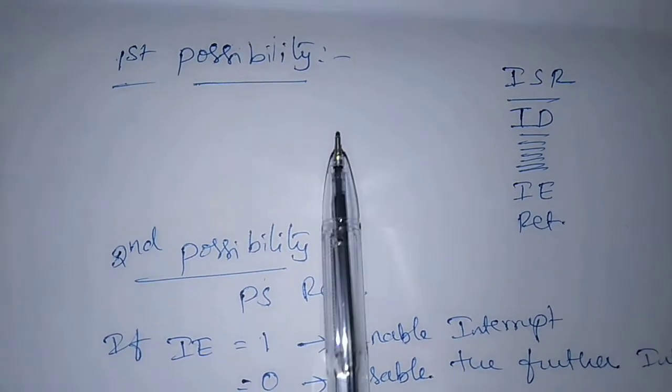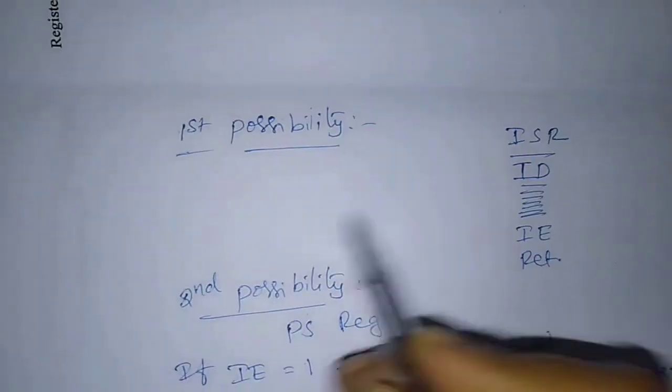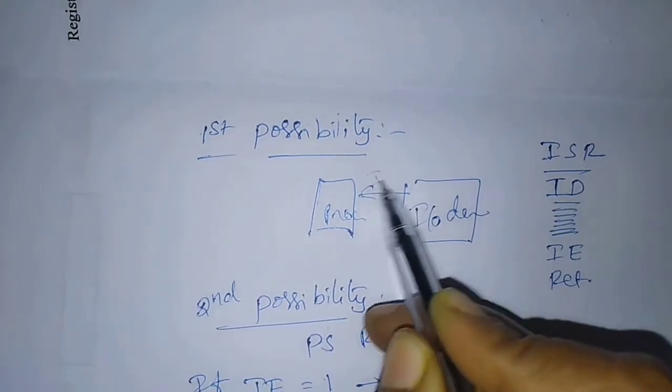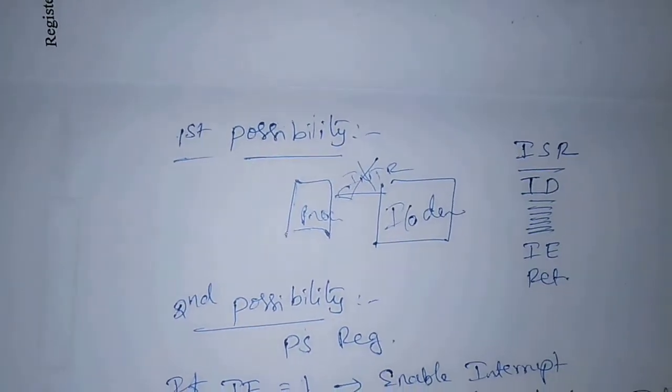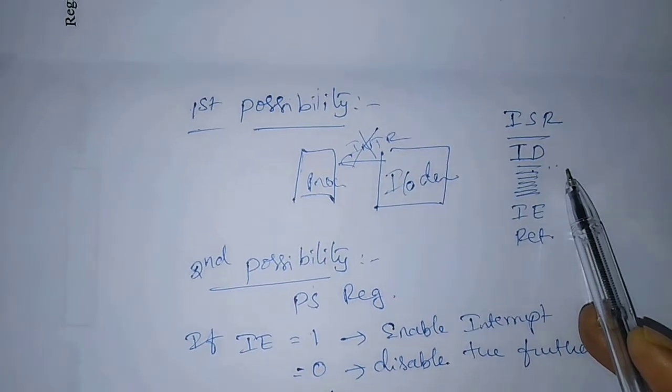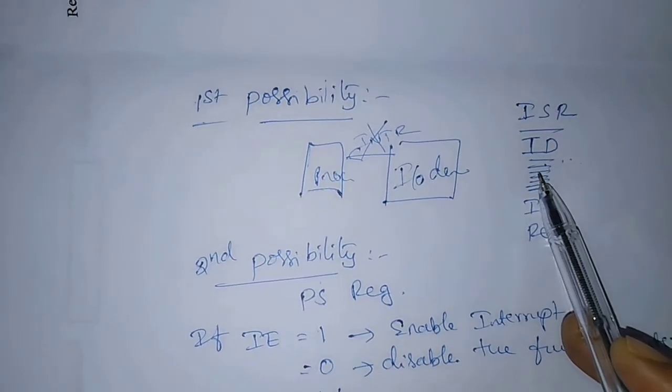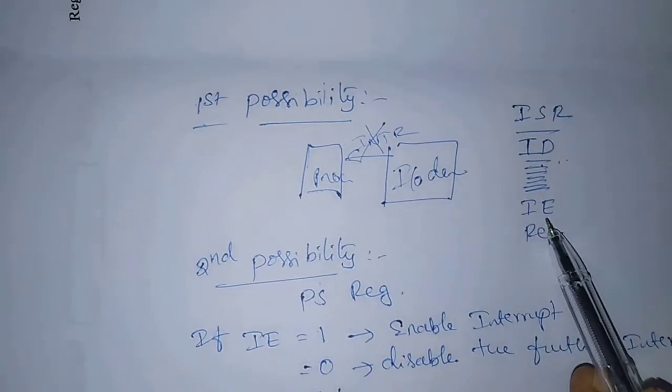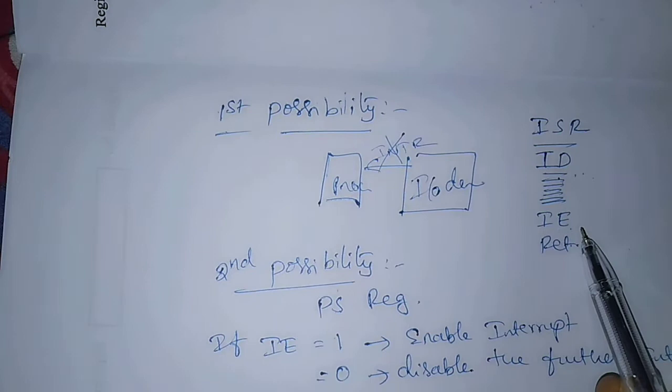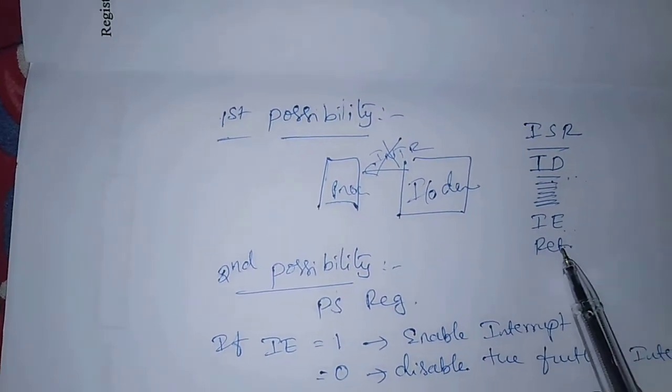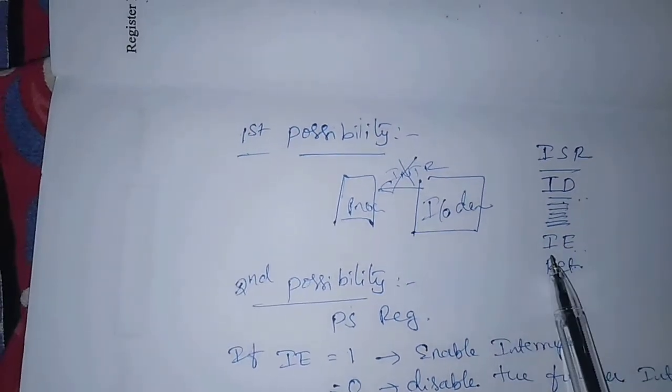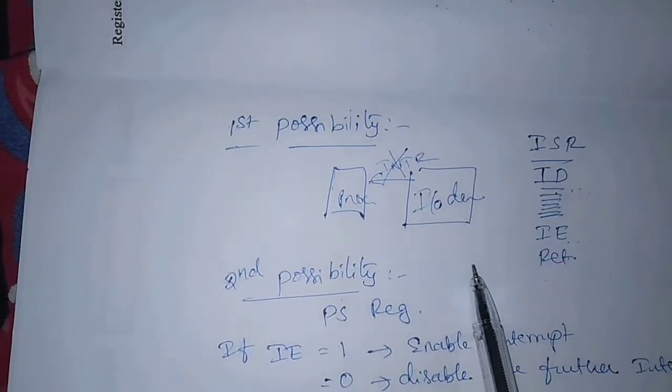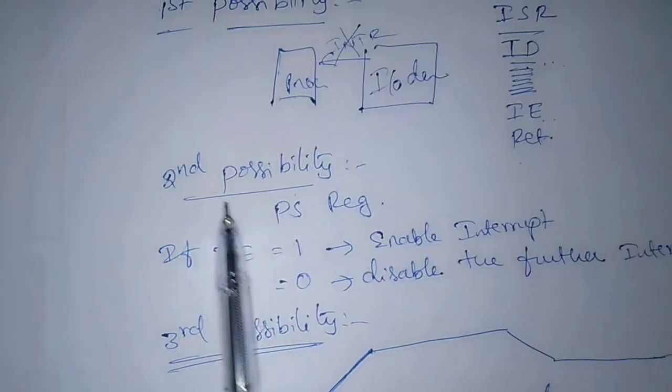In case of first possibility, to ignore the interrupt request signal. This is processor, this is IO device, this is IO device interrupt request signal, INTR. To ignore INTR line, interrupt disable instruction is used as the first instruction in the ISR, so that no further interruptions will occur until an interrupt enable instruction. So here, IE instruction will be the last instruction of the ISR before the return from ISR. That means, execution of the return from ISR is completed before further interruption occurs.